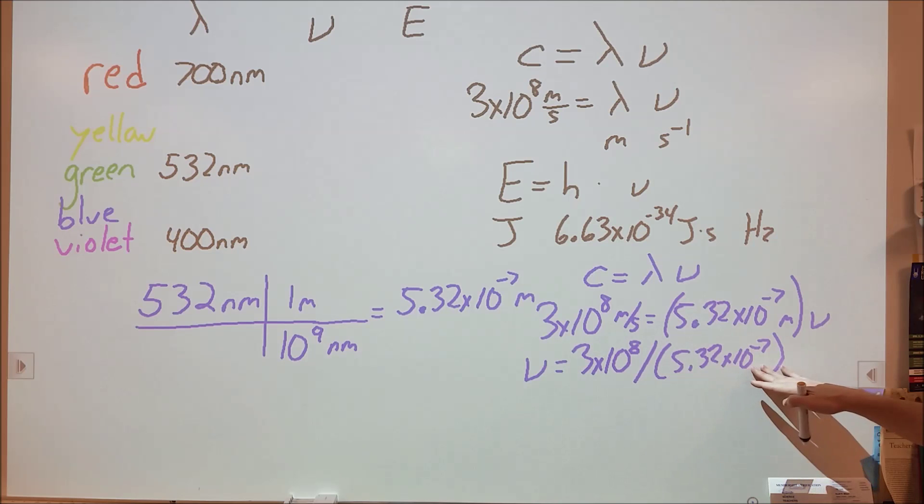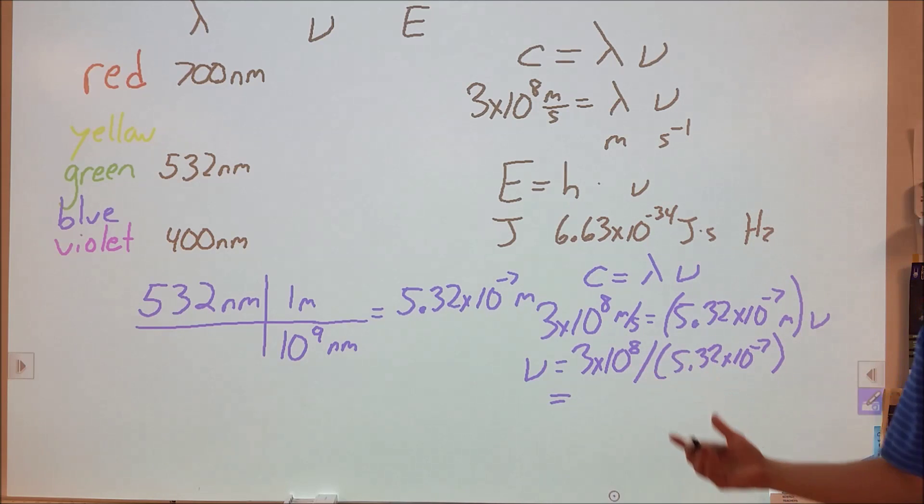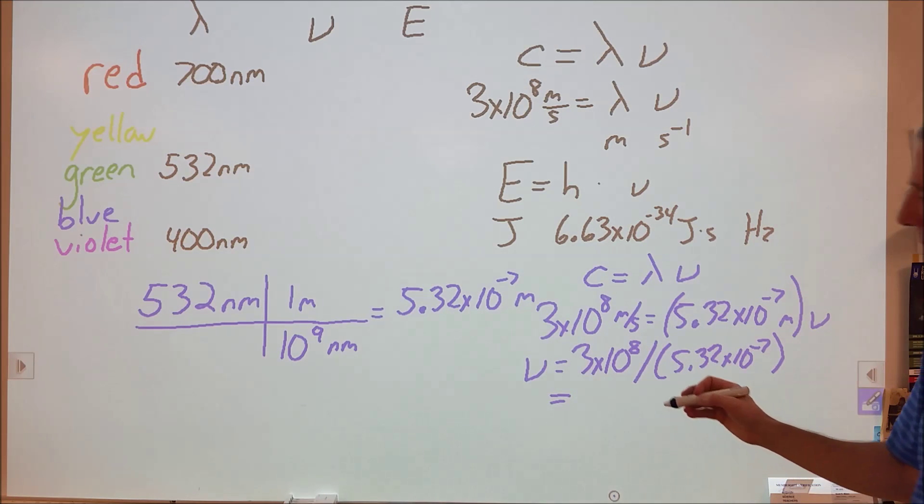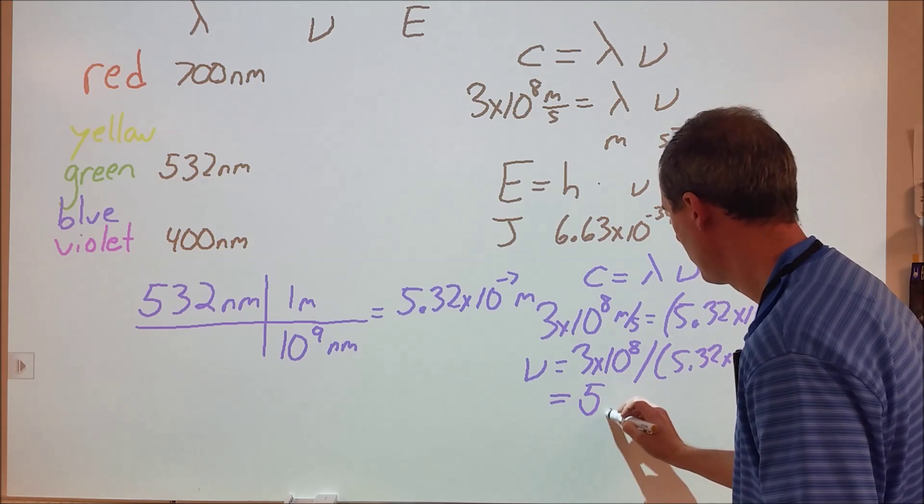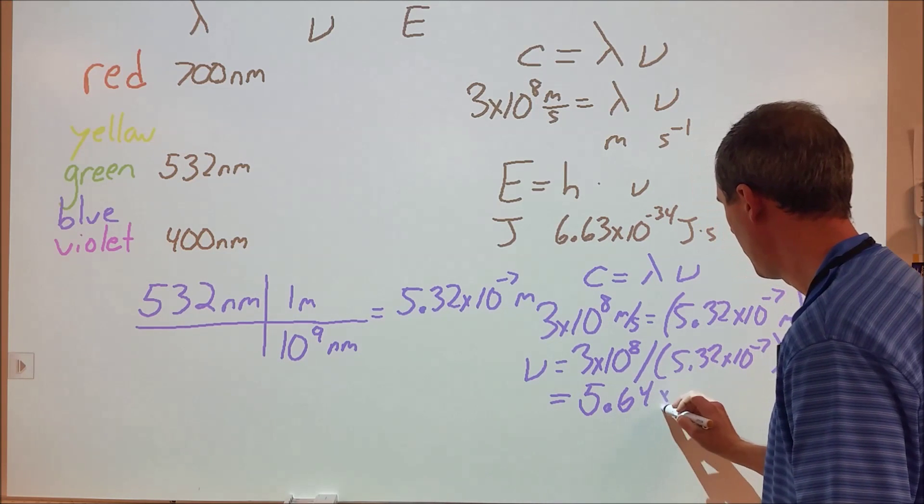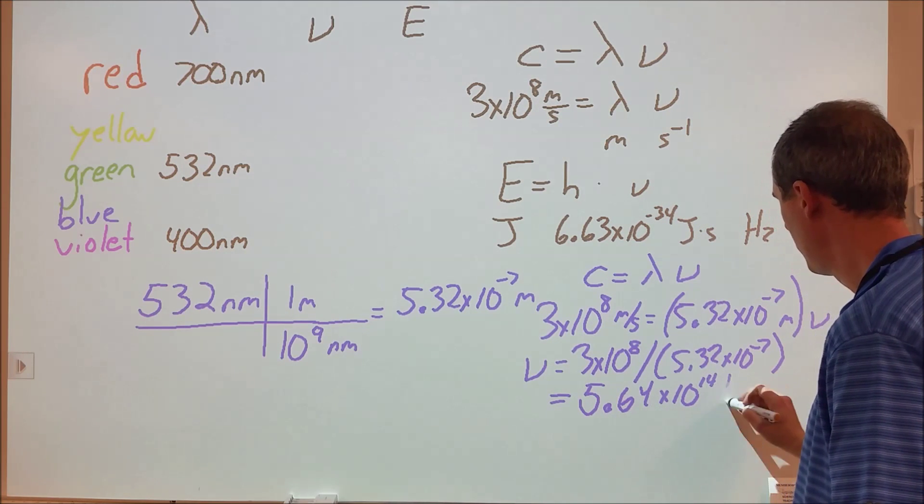If you plug that into a calculator, please put this in parentheses, otherwise you're going to pull your 10 to the negative 7th into the numerator and end up with the wrong answer. We go ahead and plug that into a calculator and we get 5.64 times 10 to the 14th hertz.